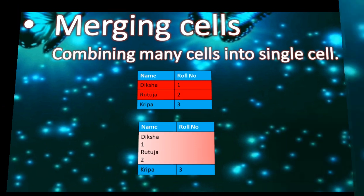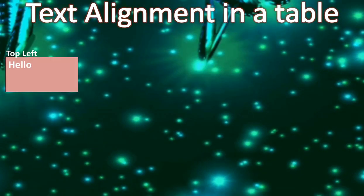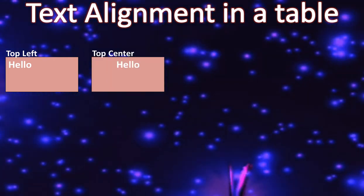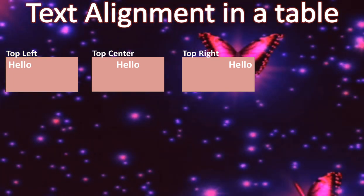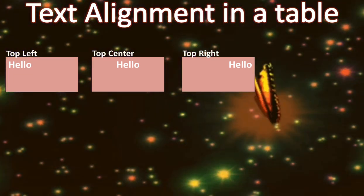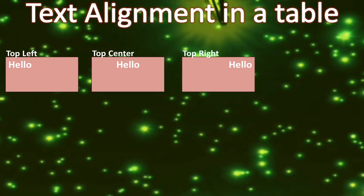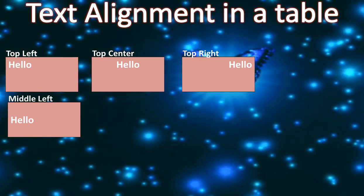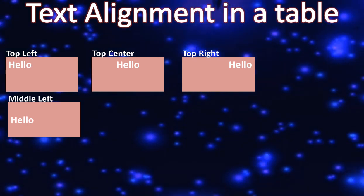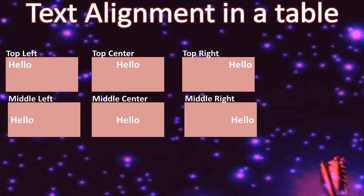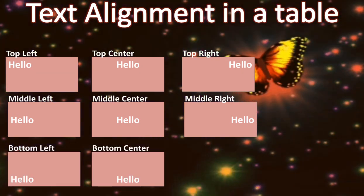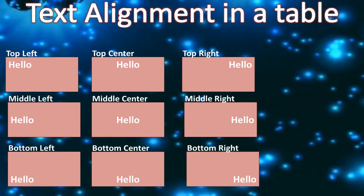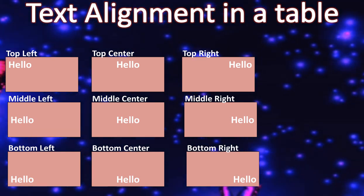Next is text alignment. Text alignment means the positioning of text inside a cell. There are nine types: top left, top center, top right — at the top of the cell. Then middle left, middle center, middle right — in the middle of the cell. And bottom left, bottom center, bottom right — at the bottom. So there are nine text alignments in a cell.